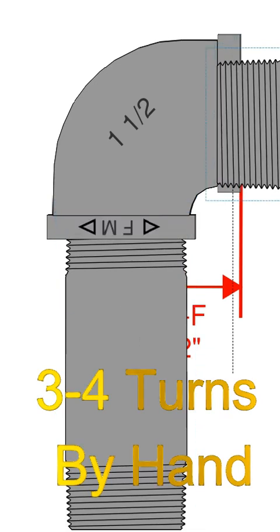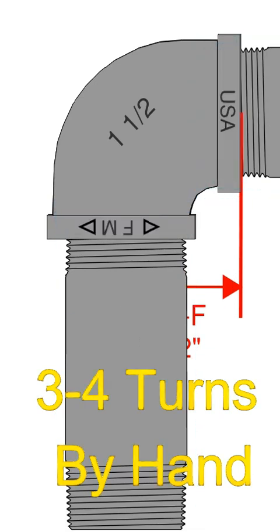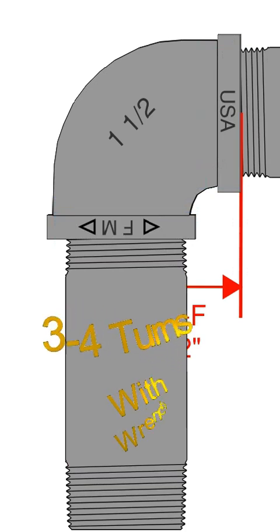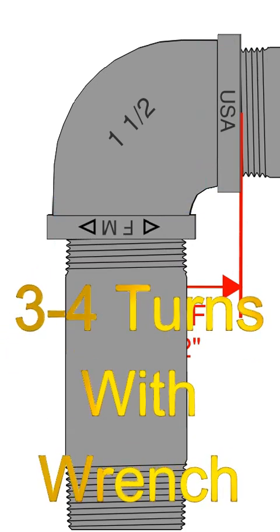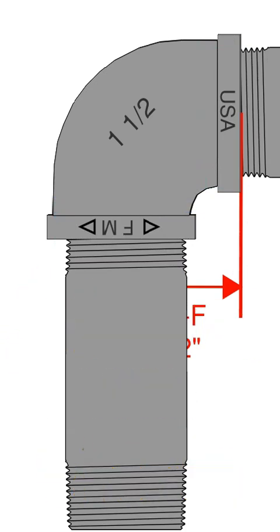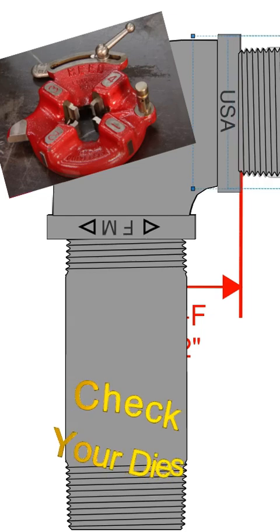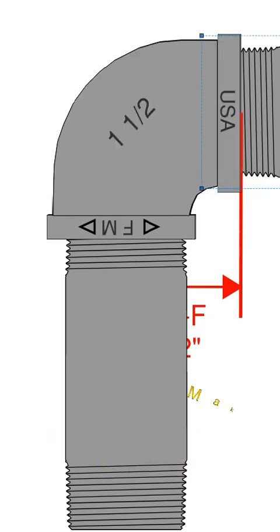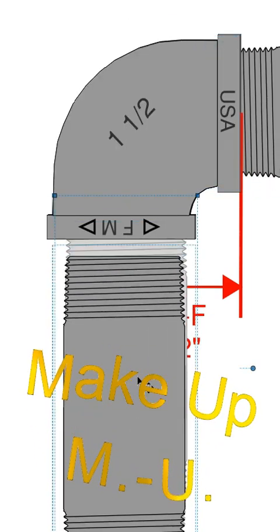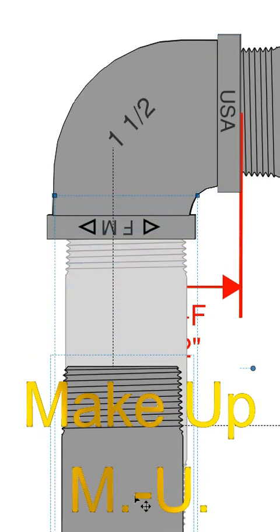You're going to get three to four turns by hand and depending how your dies are and who's on the wrench, you're going to get another three to four turns. So you're probably looking at about three quarters of an inch makeup into that fitting. Three quarters of an inch, and that'll be your makeup.